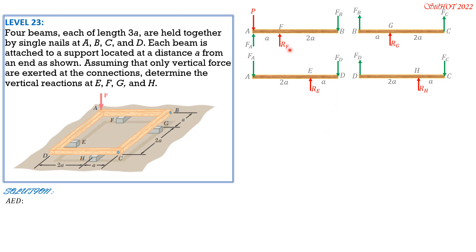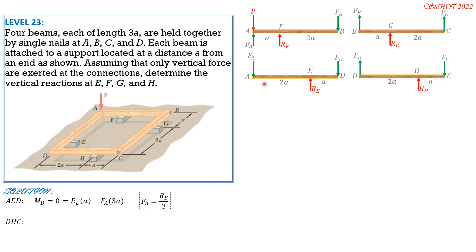Considering beam AED: setting the moment at D equal to zero gives R_E times A minus F_A times 3A equals zero, so F_A equals R_E/3. Proceeding to beam DHC: setting moment at D equal to zero, counterclockwise positive: R_H times 2A minus F_C times 3A equals zero. Canceling A gives F_C equals (2/3)R_H.